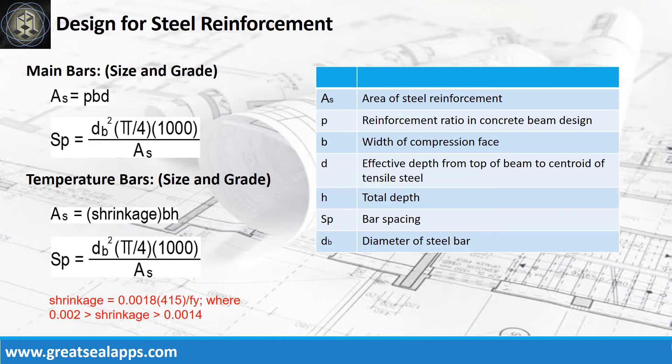After getting the rho value, proceed to solve the area of steel of main bars and its equivalent bar spacing, and solve the area of steel of temperature bars with its bar spacing.